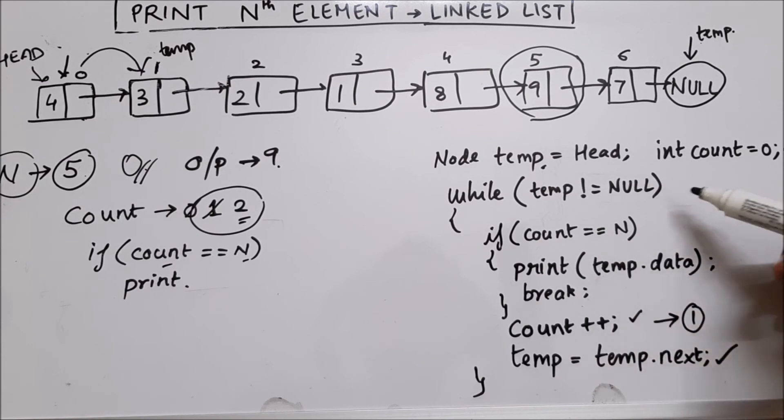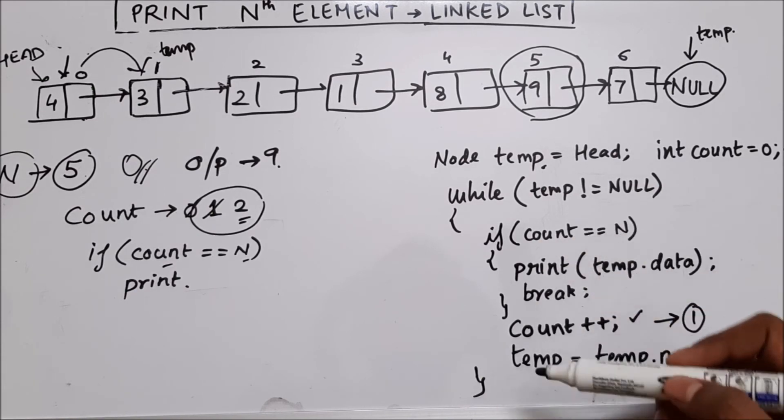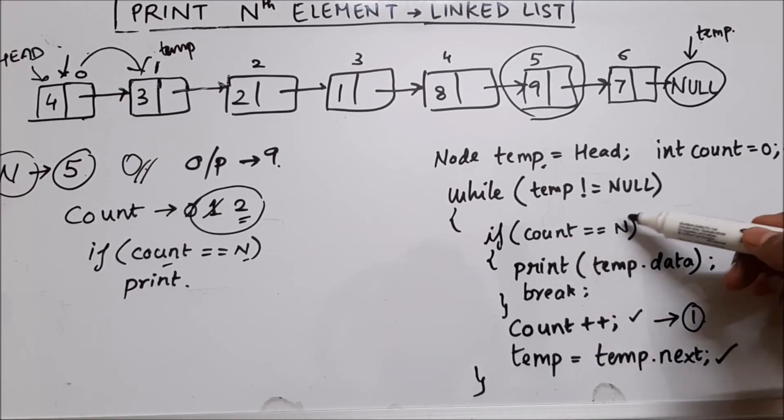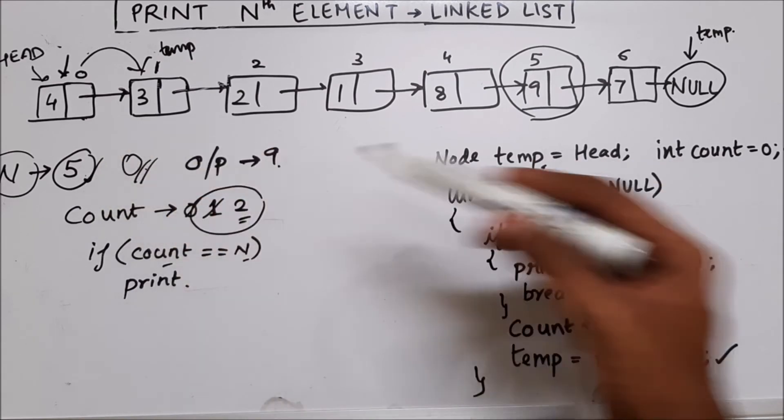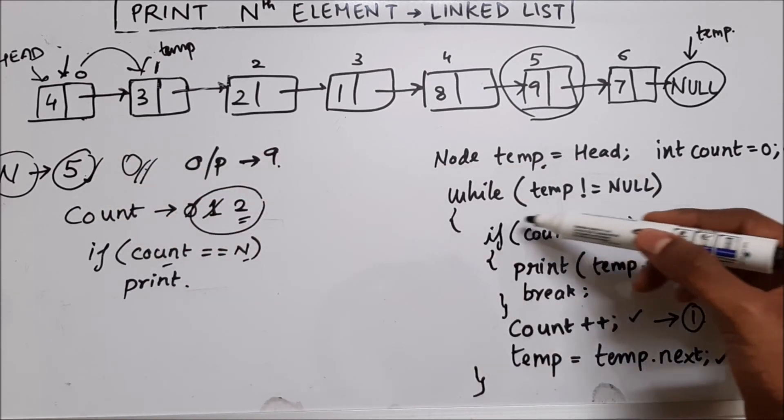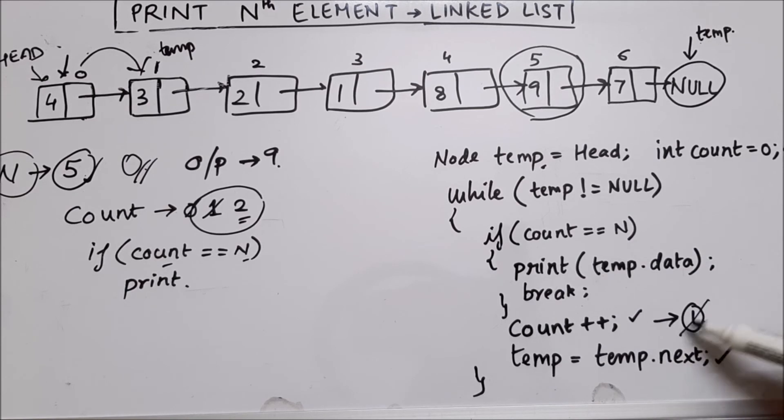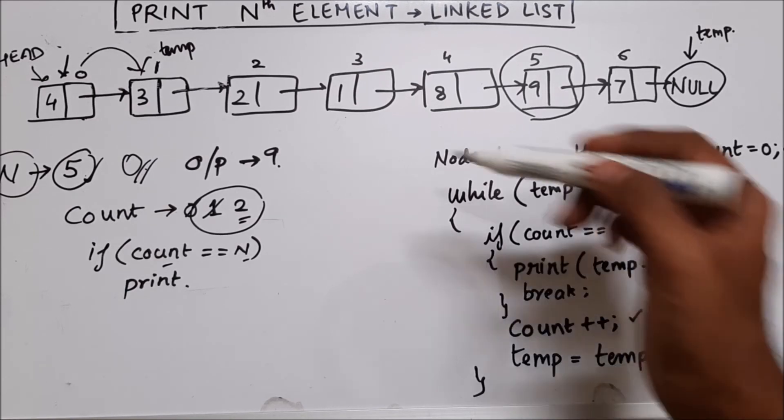Then again, the next iteration comes and we will check if count equal to n, count was one and n is given as five. So it's not a match. So we won't enter this if we come out, we increment count to two. Then we make temp to move to the next node.